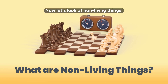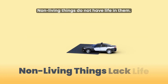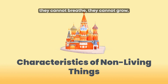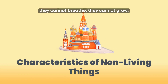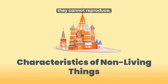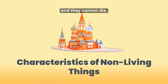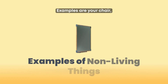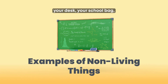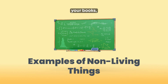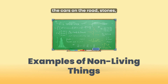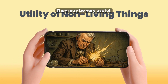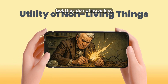Now let's look at non-living things. Non-living things do not have life in them. This means they cannot eat, they cannot breathe, they cannot grow, they cannot reproduce, and they cannot die. Non-living things are all around us. Examples are your chair, your desk, your school bag, your books, the cars on the road, stones, sand, and water. They may be very useful, but they do not have life.